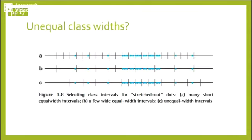Let us ask ourselves what will be the sense in having unequal class widths. Let us look at a scenario as in A. In this scenario, we have many equal class widths. Most of them are empty which will lead to a frequency of 0.